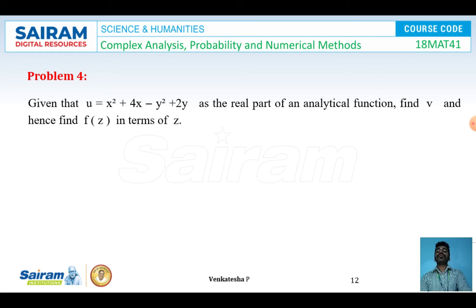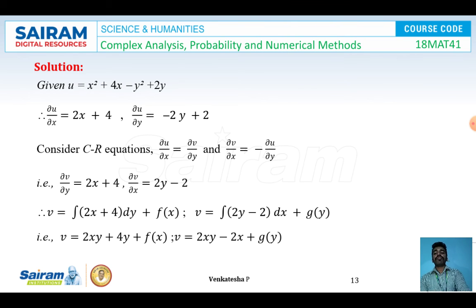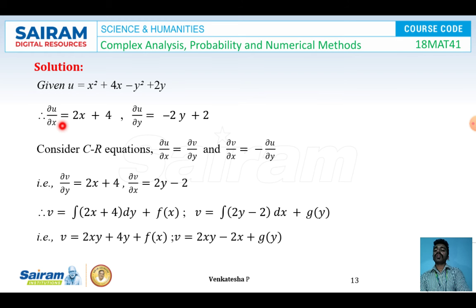Problem four: given u = x² + 4x - y² + 2y as the real part of an analytic function, find v and hence find f(z). Differentiating u partially with respect to x: ∂u/∂x = 2x + 4. Differentiating u partially with respect to y: ∂u/∂y = -2y + 2.